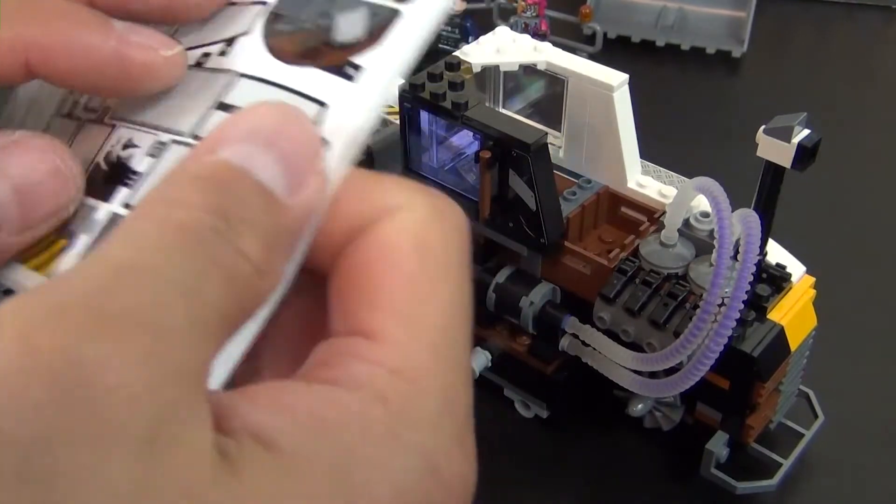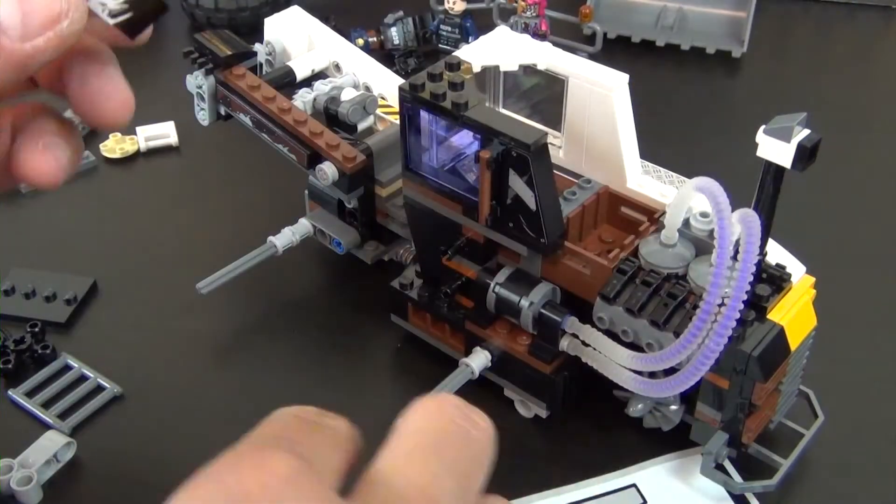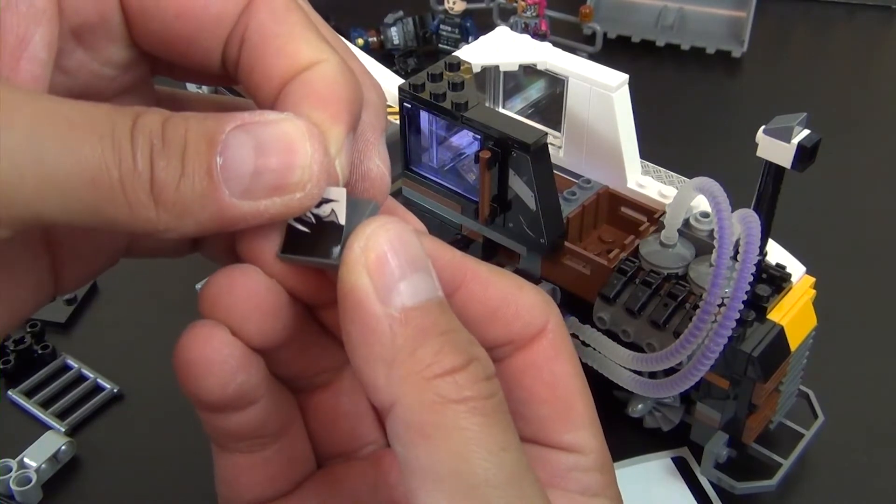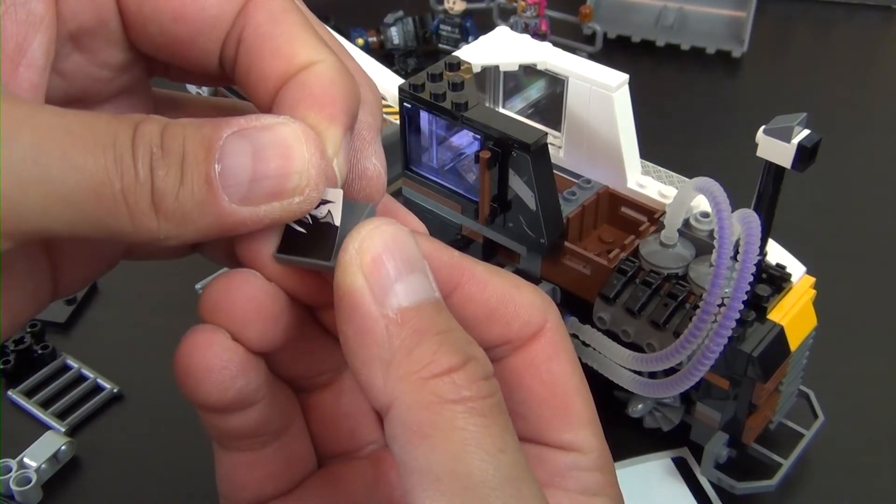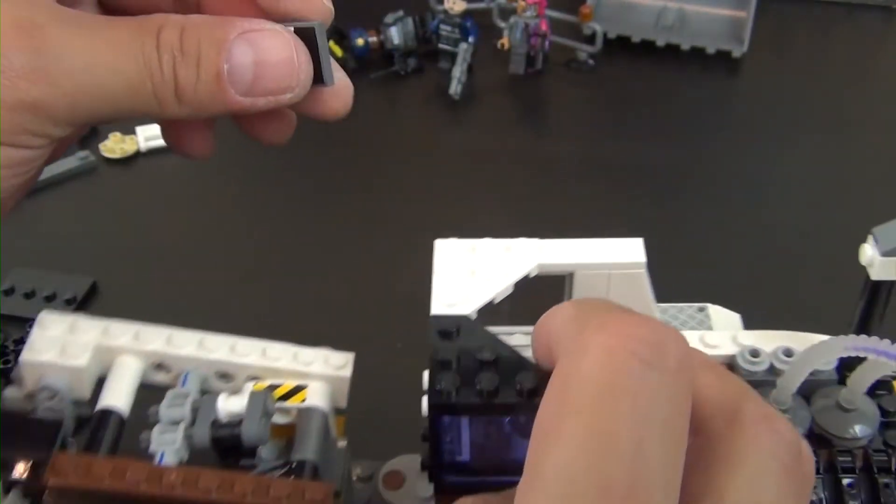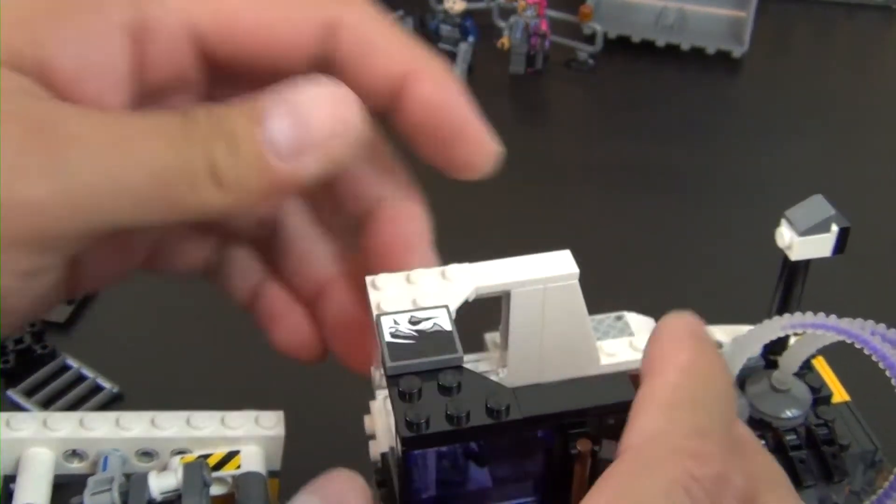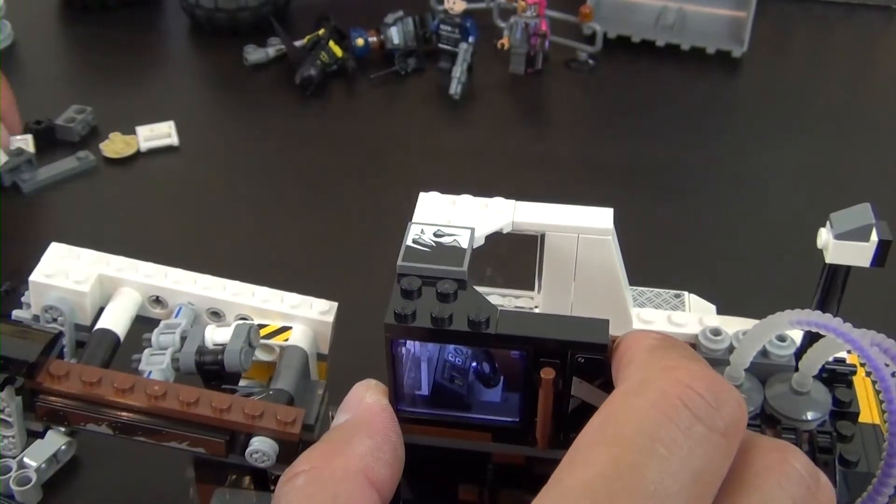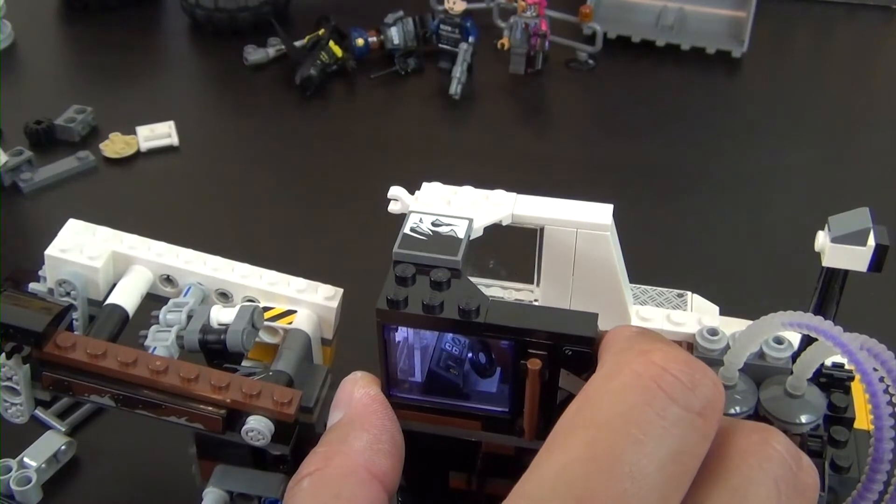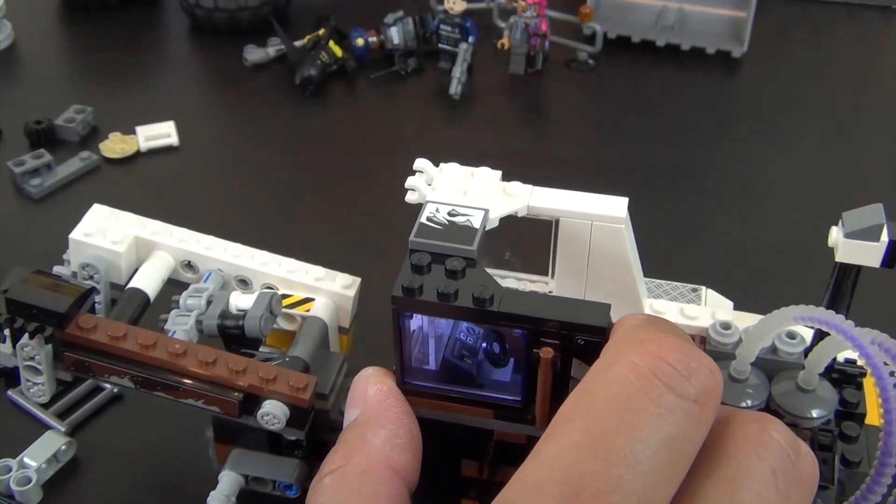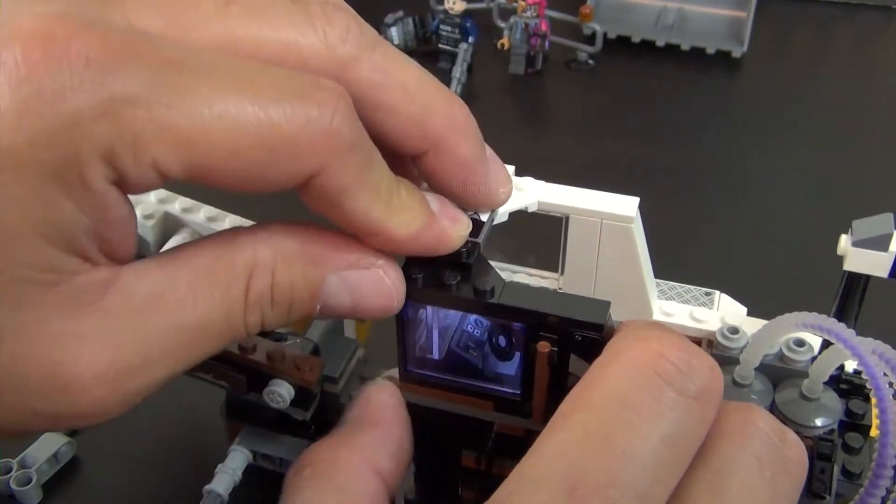This is sticker number 11. This sticker basically splits this tile into the two different colors that we see for the body. I'll go right there so you can see the black and the white. Some clips - we have the white clips on this side and the black ones on this side.